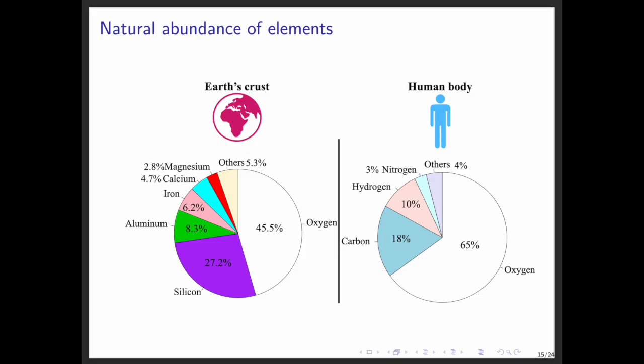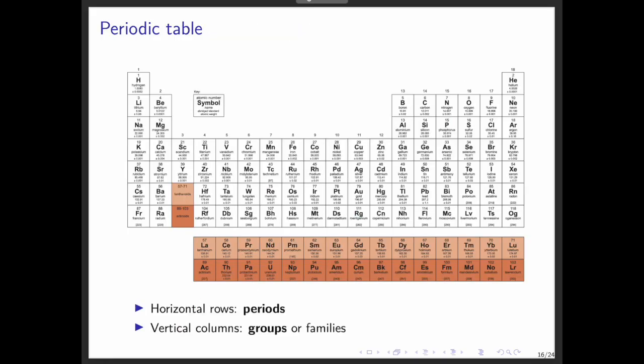Currently, there are about 118 known elements, of which 88 occur naturally. Examples include hydrogen, carbon, oxygen, and calcium. All elements are organized in the periodic table of elements. The table has horizontal rows called periods, and vertical columns called groups, or families. The periodic table is one of the most important tools in chemistry because it helps us understand relationships and predict properties.